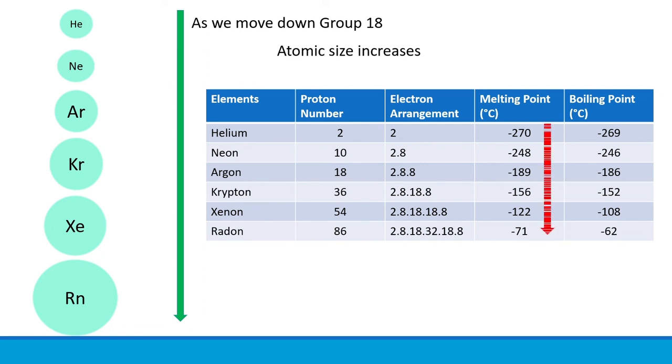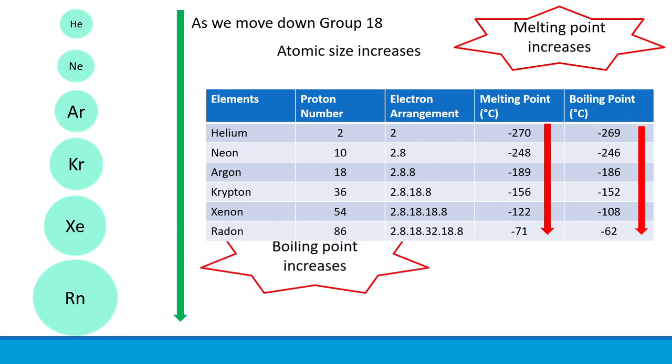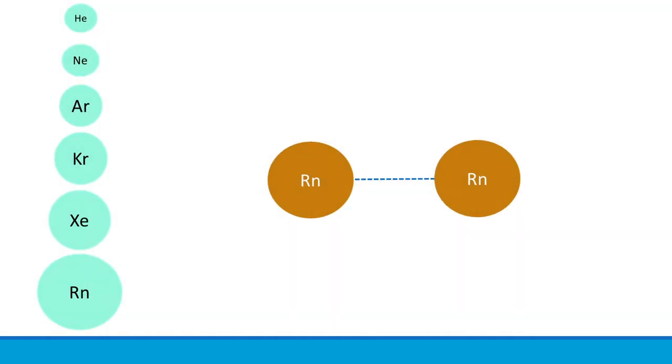Interestingly, the melting point increases as we move down the group. The boiling point of noble gases also increases as we move down the group. So, what is the reason for this?